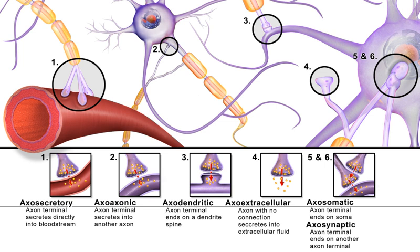The holonomic brain theory, developed by neuroscientist Carl Pribram initially in collaboration with physicist David Bohm, is a model of human cognition that describes the brain as a holographic storage network. Pribram suggests these processes involve electric oscillations in the brain's fine-fibre dendritic webs, which are different from the more commonly known action potentials involving axons and synapses. These oscillations are waves and create wave interference patterns in which memory is encoded naturally, and the waves may be analyzed by a Fourier transform.